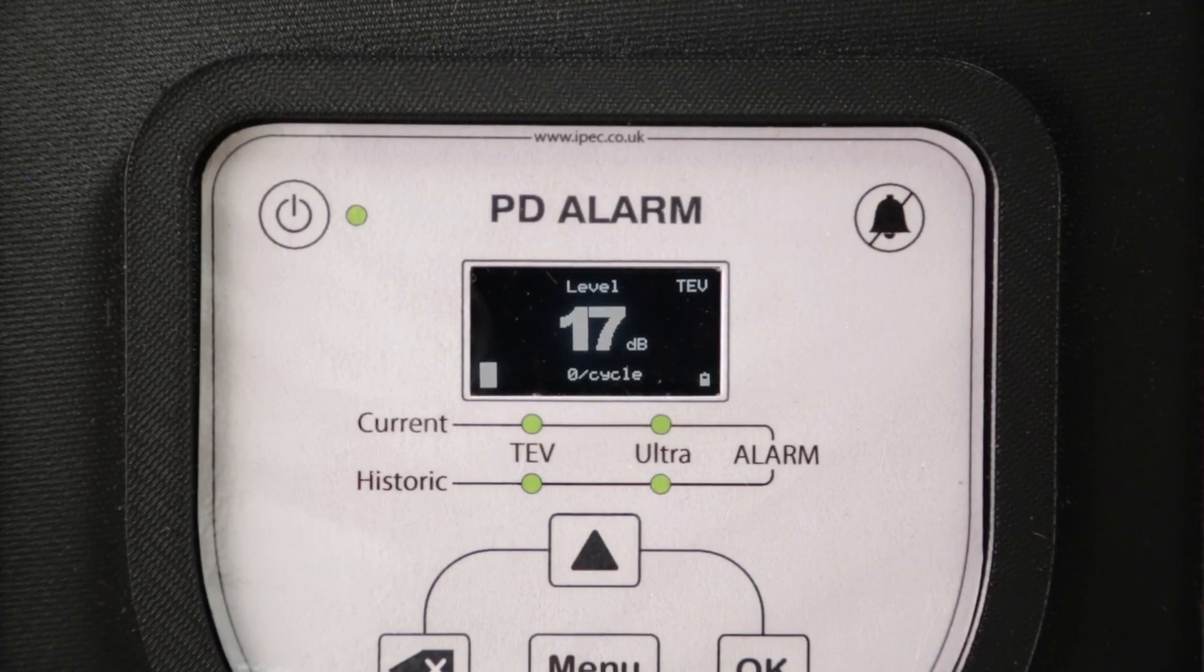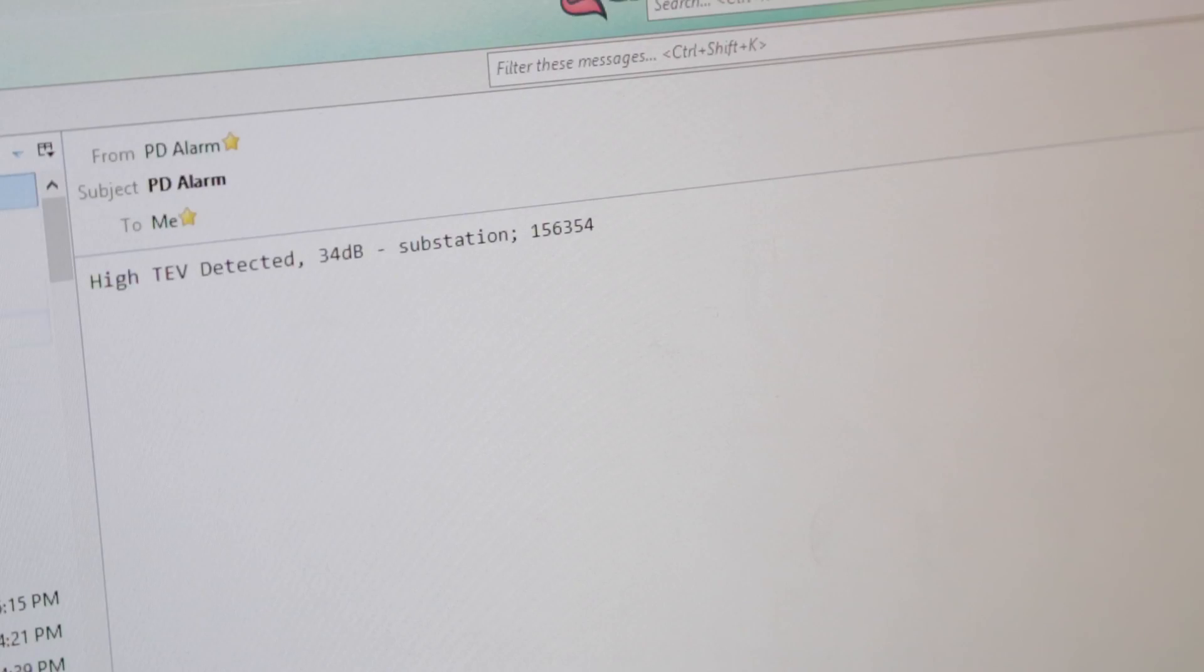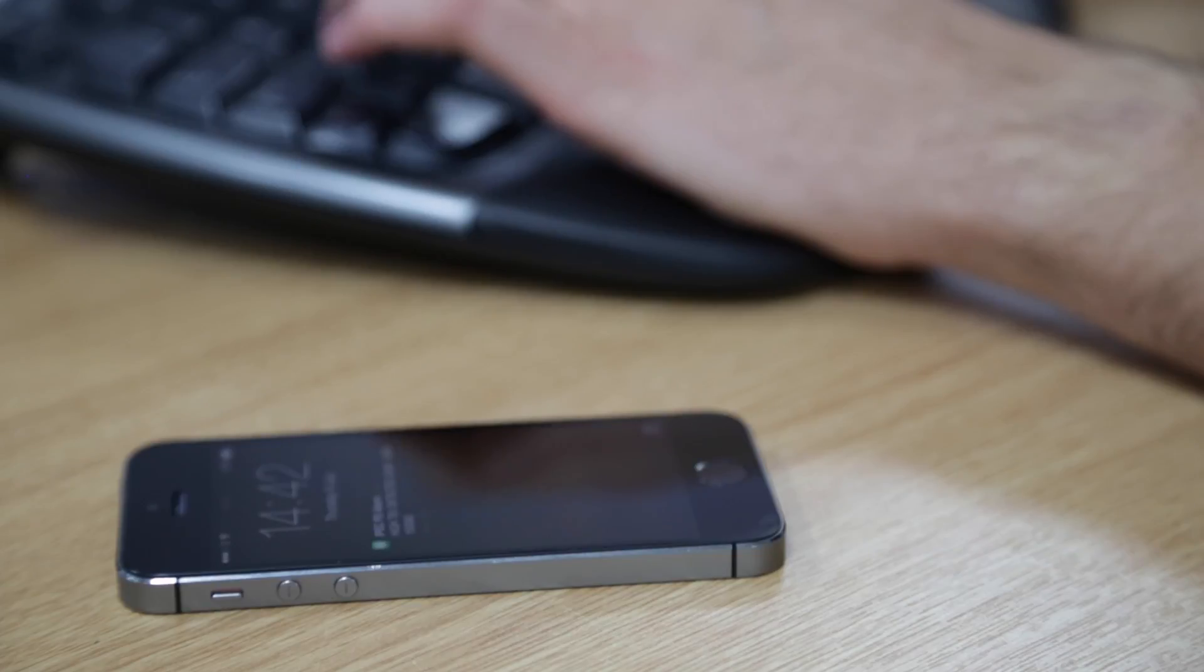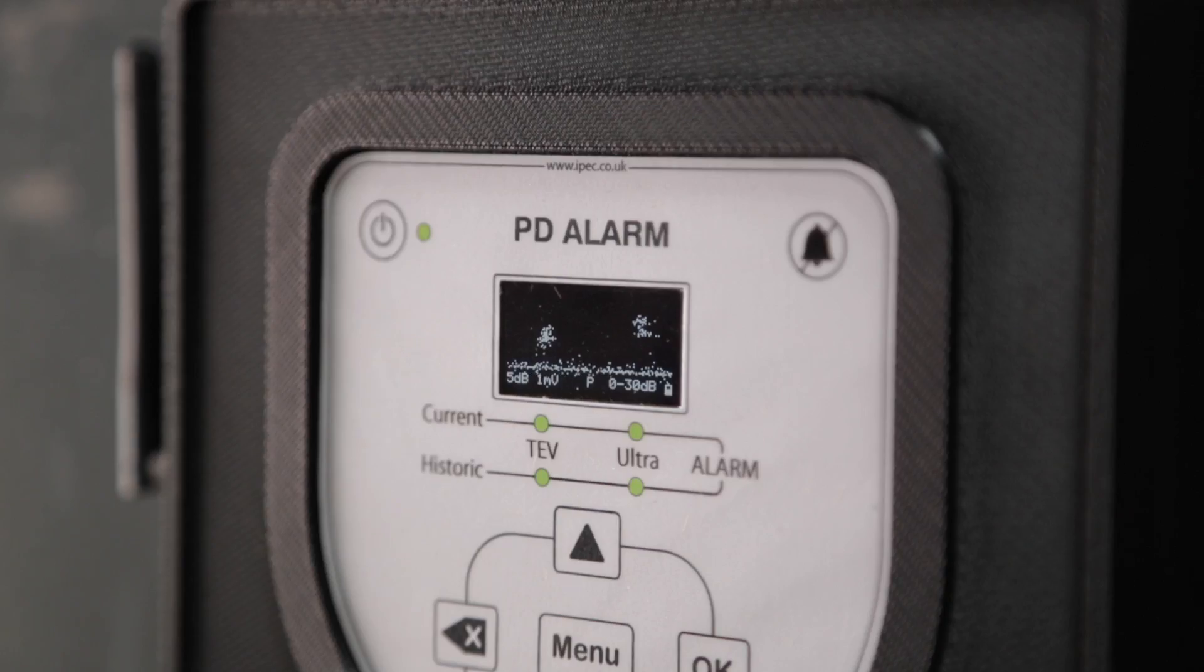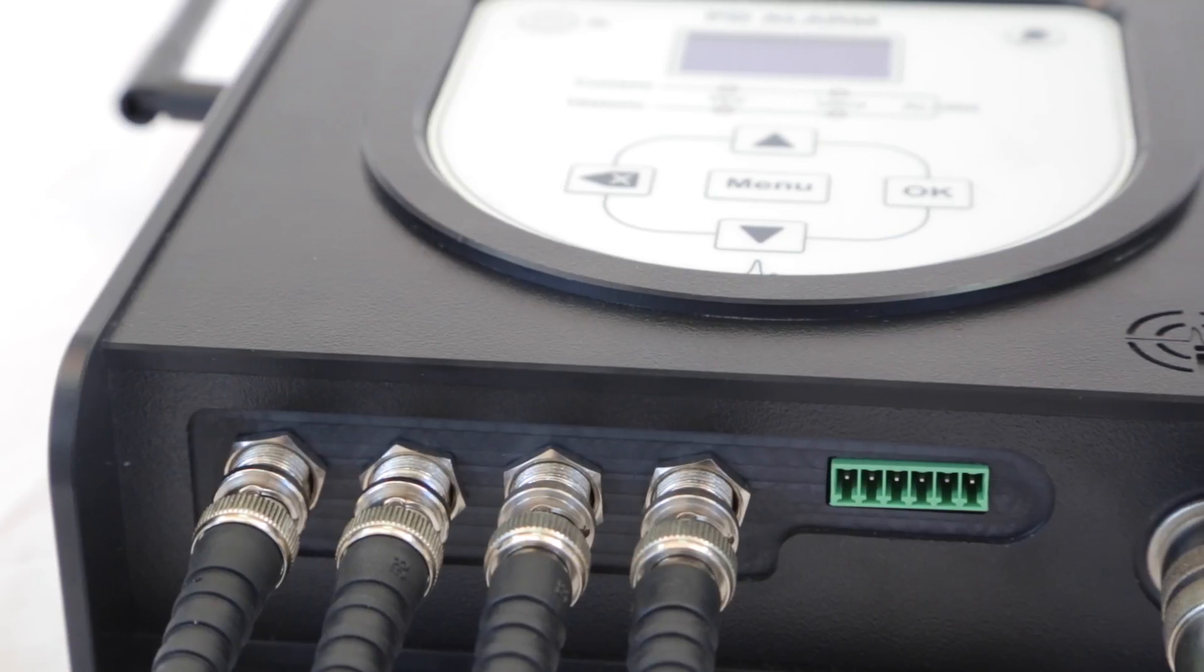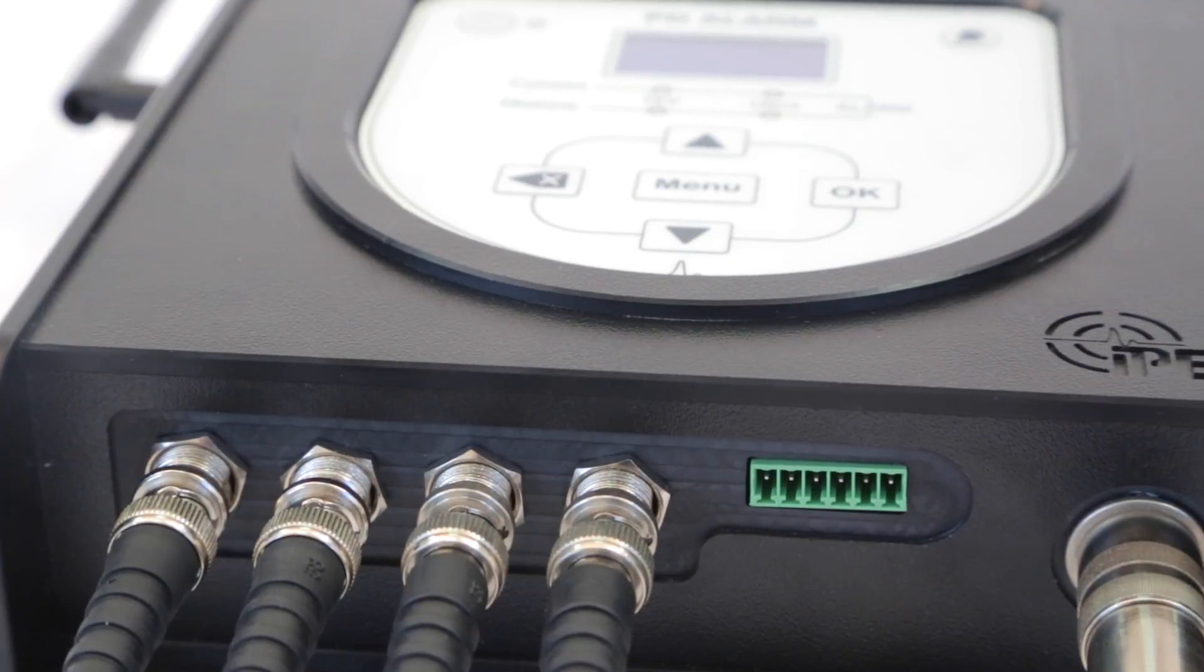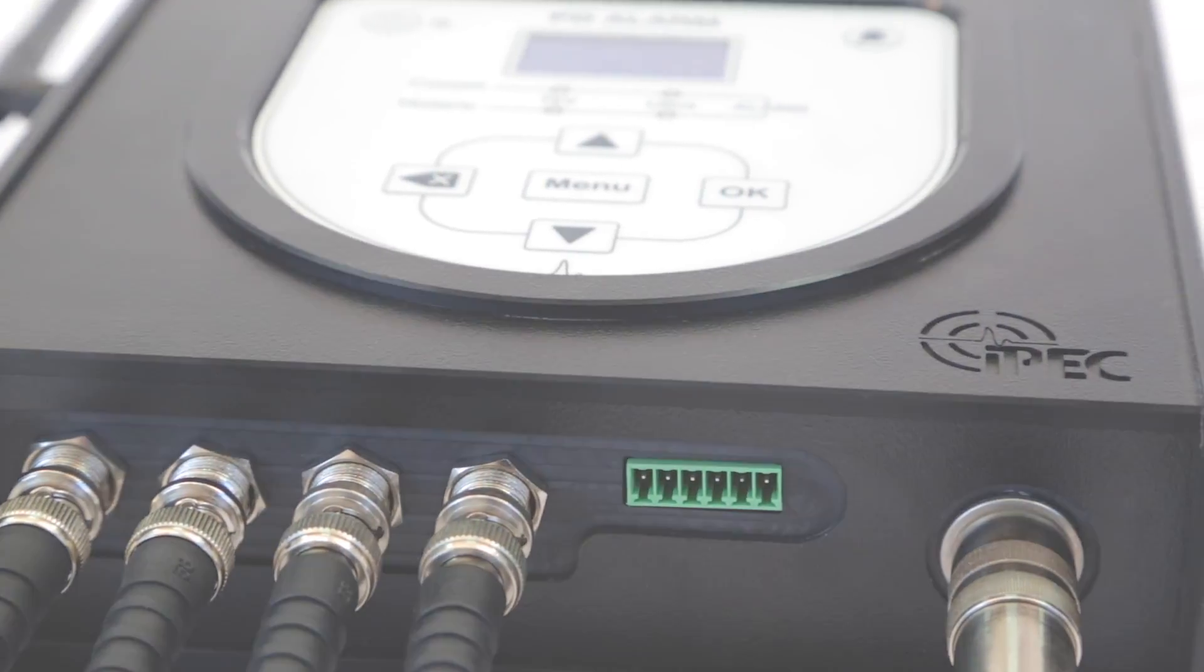The instrument activates local and remote alarms including SCADA, SMS, and email when activity levels exceed preset thresholds. The PD alarm is the latest in our range of products for secondary substations. This smart device is cost-effective, reliable, and gives total peace of mind.